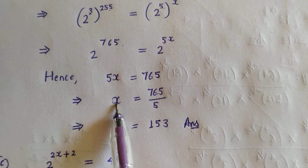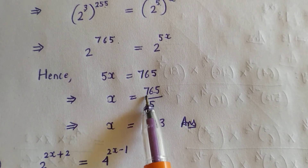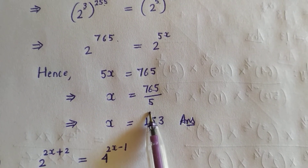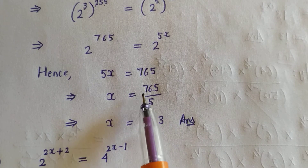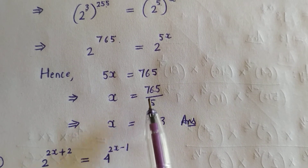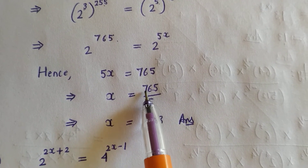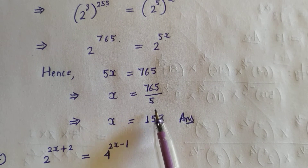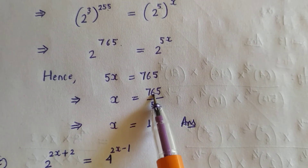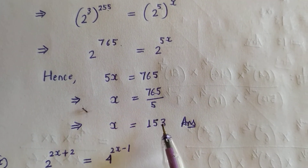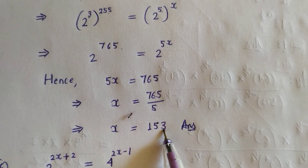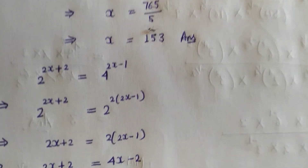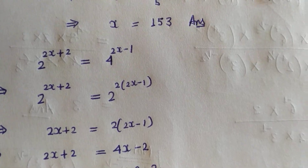Since the bases are the same, the exponents are equal: 5x = 765. That implies x = 765 divided by 5. Dividing: 765 ÷ 5 = 153. So x is equal to 153.